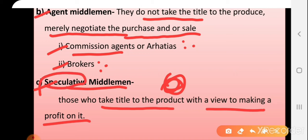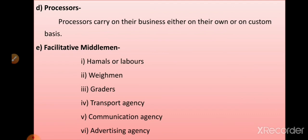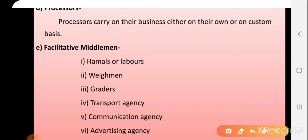Processors carry their business using these products as raw materials or inputs for their production. The next category is facility middlemen. Facility middlemen provide different kinds of functions or services to those products. Like hamals or laborers who perform unloading, loading, and packaging. There are also weighing persons who weigh the produce, and graders who grade or sort commodities according to size, shape, and color.